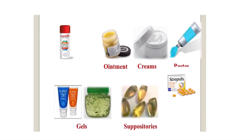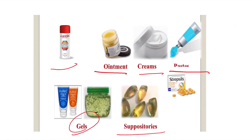As we can see in our practical lecture, there are different formulations used for topical effects: powders, ointments, creams, pastes, gels, suppositories as we talked about, and lozenges. Lozenges are used basically for throat infections or cough where there is constant irritation of pharyngeal mucosa — like Strepsils, which lubricate the surface and decrease irritation.